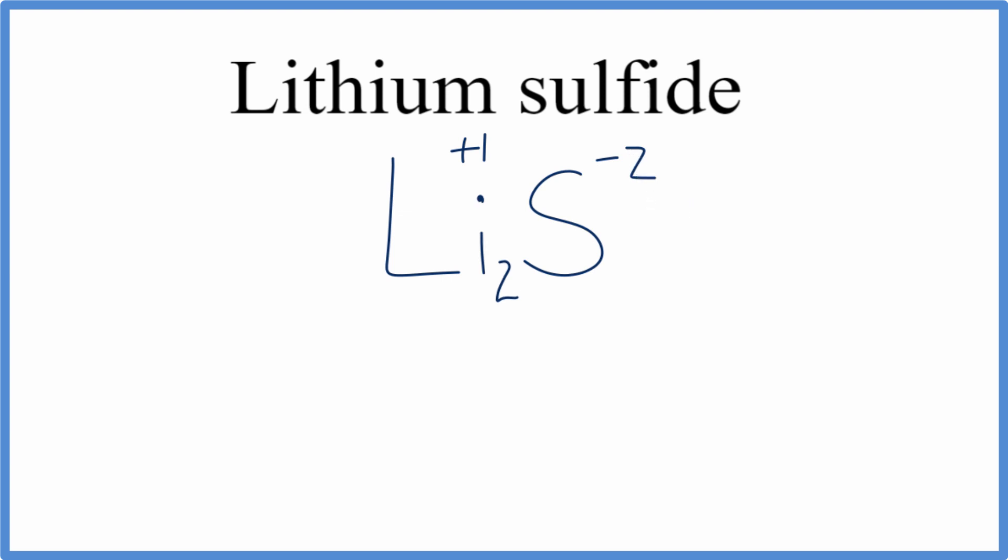We can quickly check our work using the crisscross method. So we take the two on the sulfur, we move that down here to be the subscript, and the one on the lithium, and we don't really need to write the one. And let's remove the charges, and it gives us the same answer, Li2S. So that's the formula for lithium sulfide, Li2S.